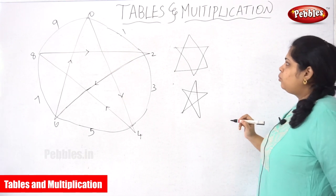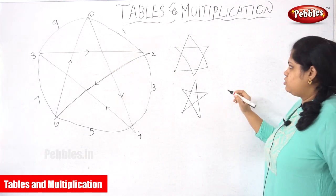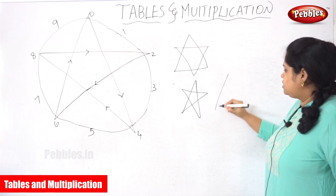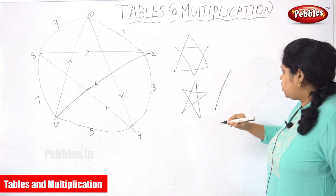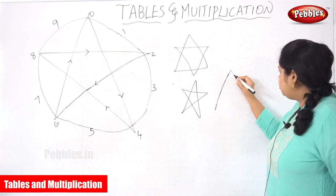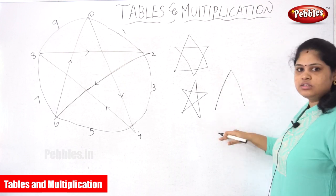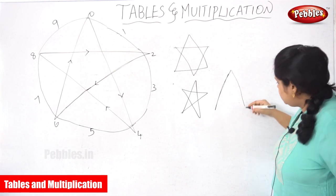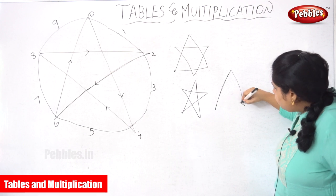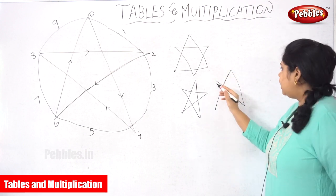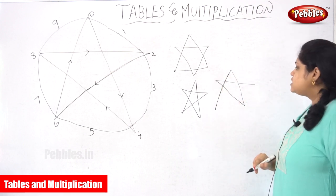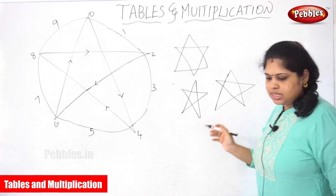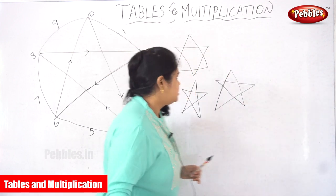Drawing it the other way looks similar, but at one point you will get confused. The correct procedure to draw the star: make one slanting line, then again a slanting line downward — it looks like a mountain. Then from that end go upward, then make a sleeping line, and join the two points with a slanting line. That is the procedure to draw the star.